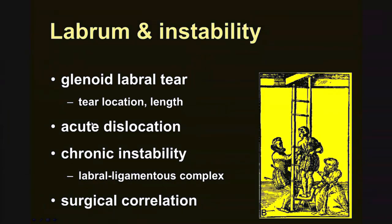With that, I conclude. During the time I've had, I've addressed the labrum and the labral ligamentous complex, the appearance of the labral tear antero-inferiorly. What I recommend in your reports is that you identify the location of the tear and describe when possible its length — for example, antero-inferior with inferior extension. I've also gone over the appearance of bony lesions and labral tears in the setting of acute dislocation, and contrasted those findings with their appearances in chronic instability. And I've also tried to review some of the surgical procedures, such as the soft tissue repair versus the Latarjet procedure. Thank you for your attention.